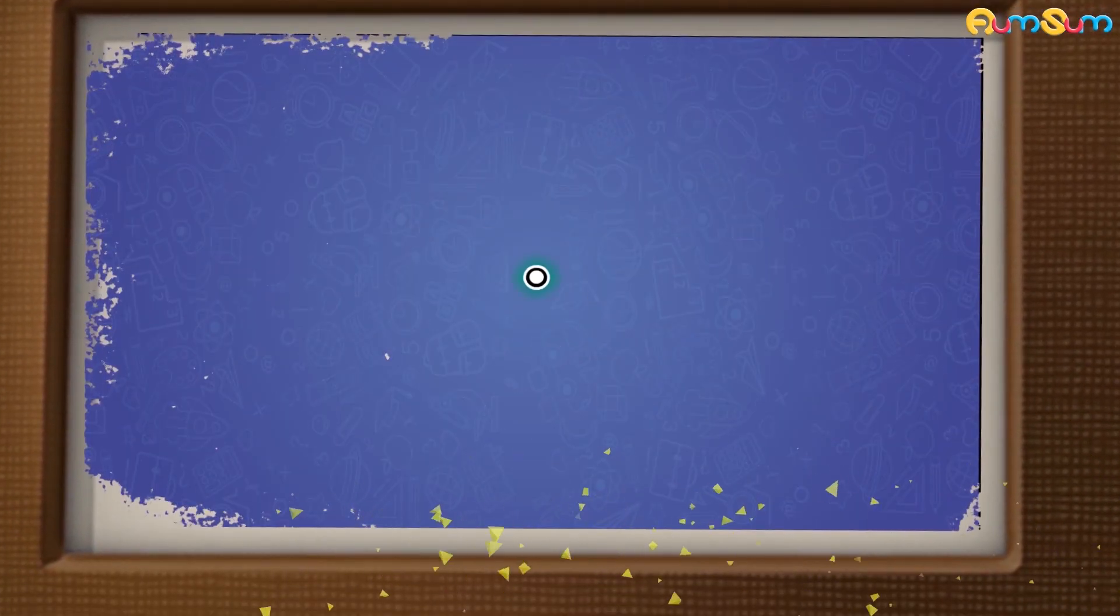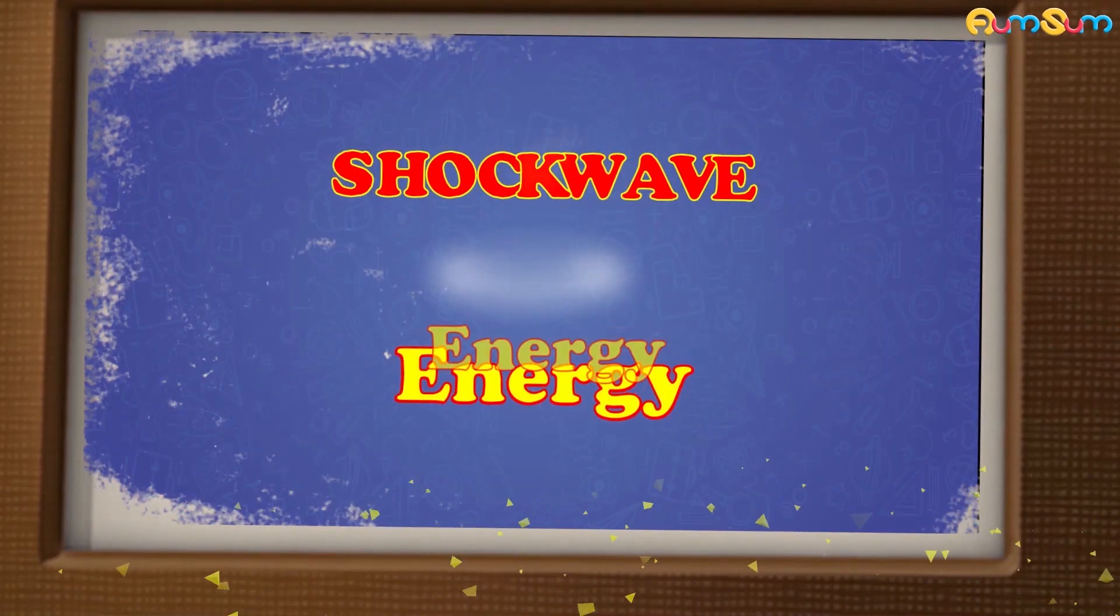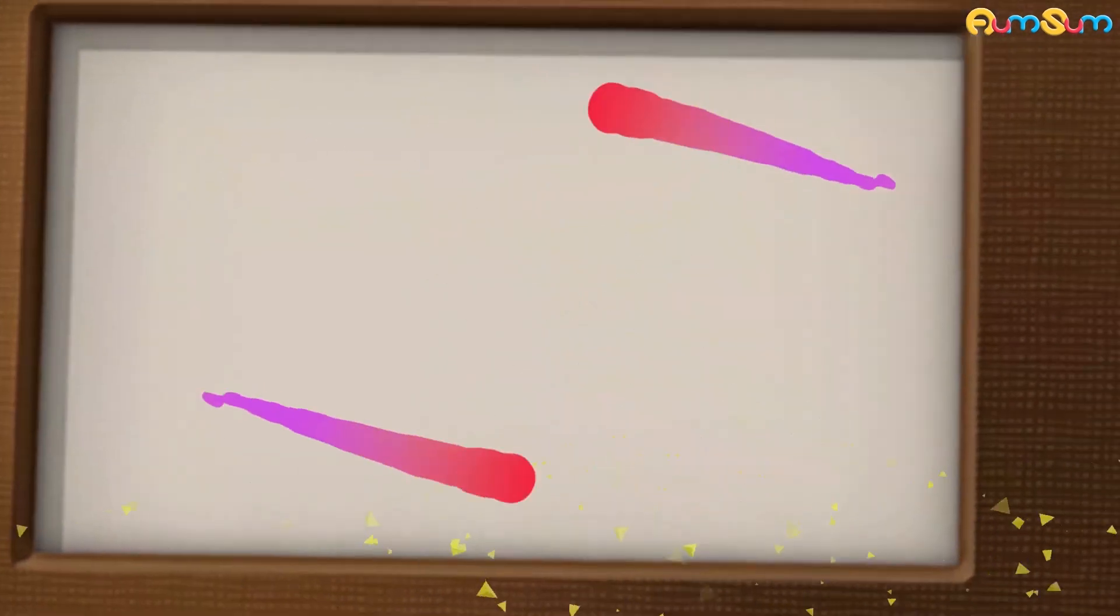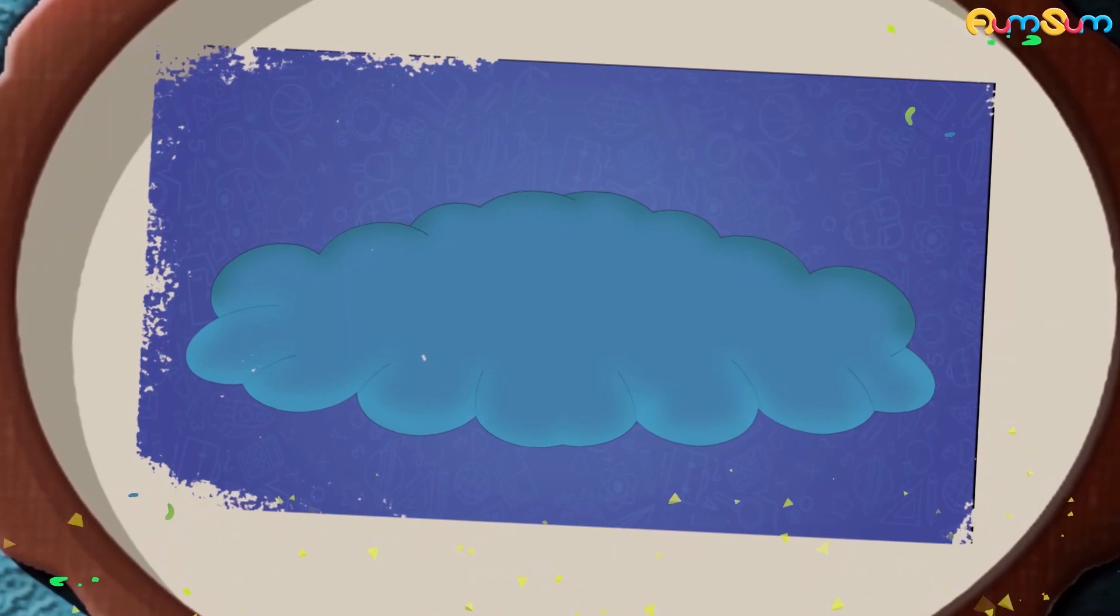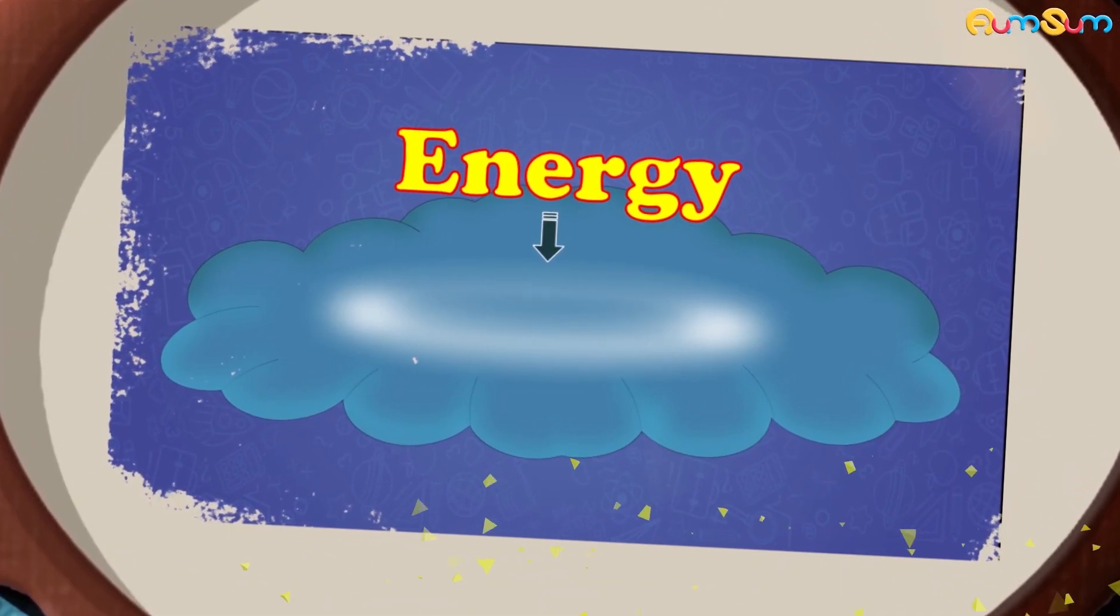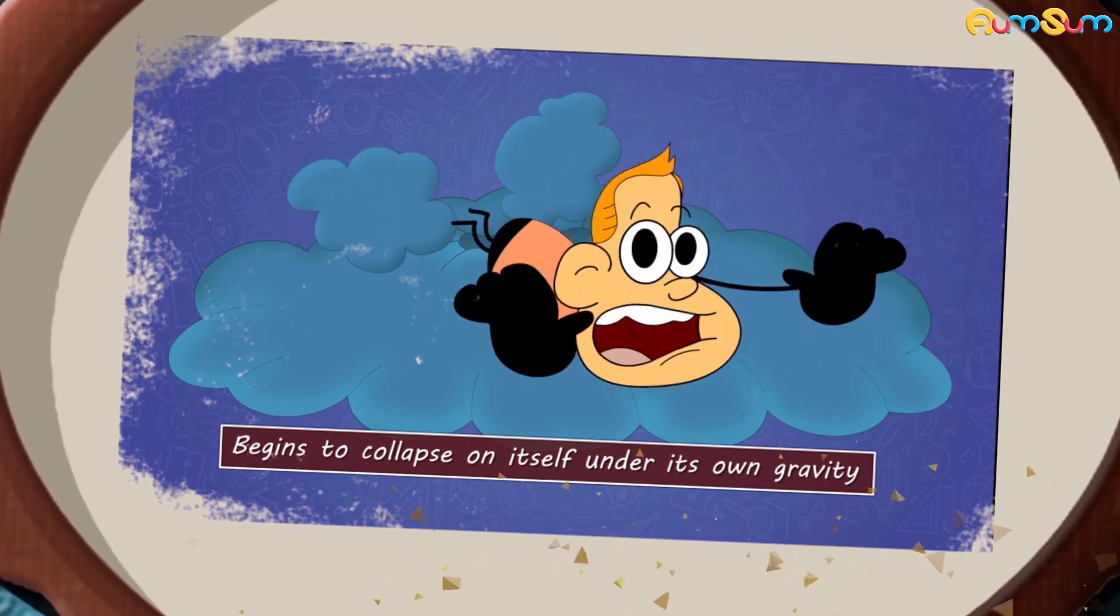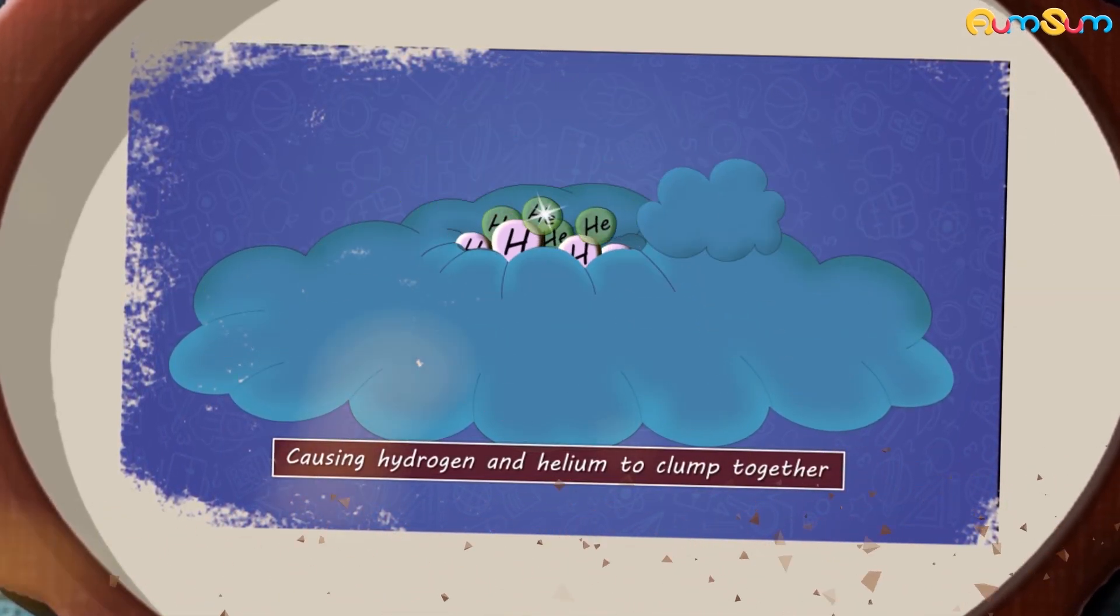However, a nearby supernova explosion or galactic collision may send a shockwave or tremendous amount of energy through a molecular cloud. Now, in the molecular cloud, this energy causes a gravitational disturbance, due to which it begins to collapse on itself under its own gravity, causing hydrogen and helium to clump together.